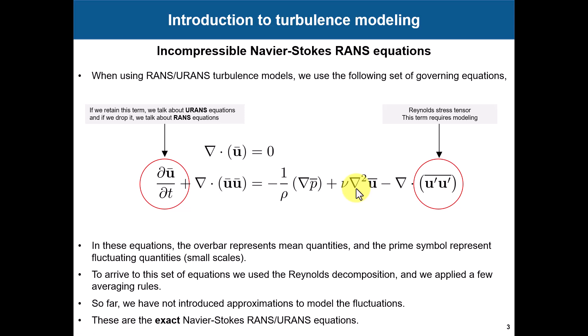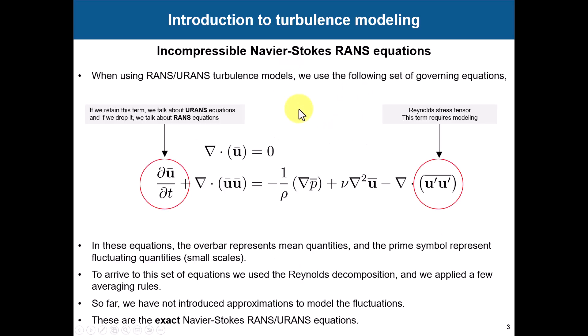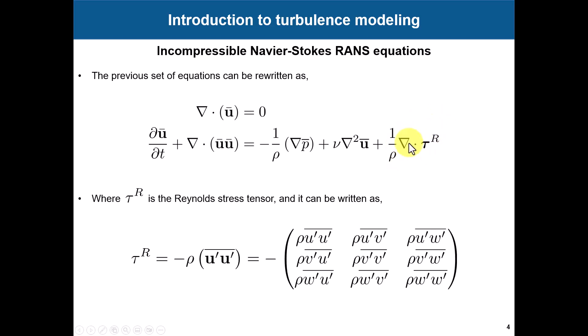To arrive at these equations we use what is called the Reynolds decomposition. We also apply a few rules and some mathematical algebra. It is outside the scope of this video to show how to do that, but in the video description you have a link to a PDF where you can see this step - it's not that difficult, it's very simple algebra and assumptions. Basically these equations can now be rewritten, and we introduce this term which is a change of notation - this is what we call the Reynolds stress tensor.